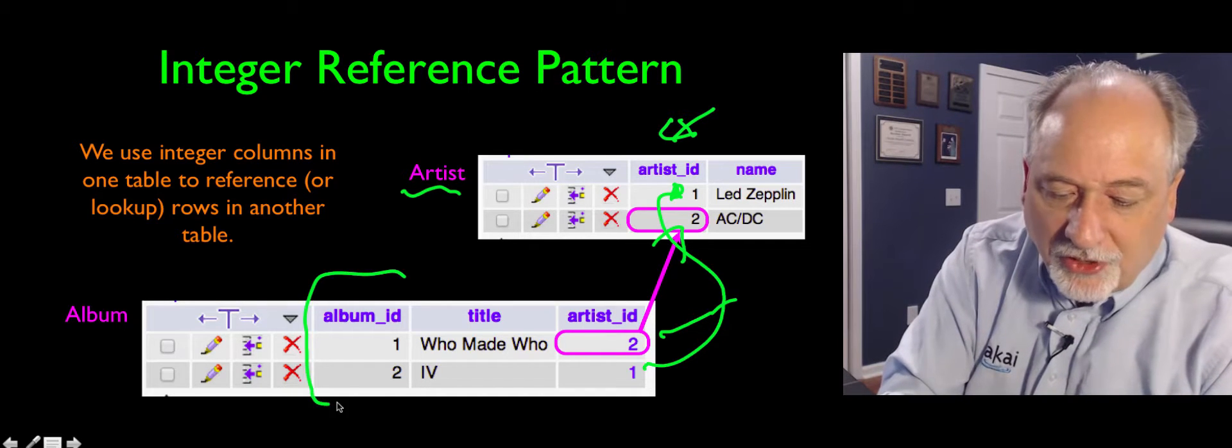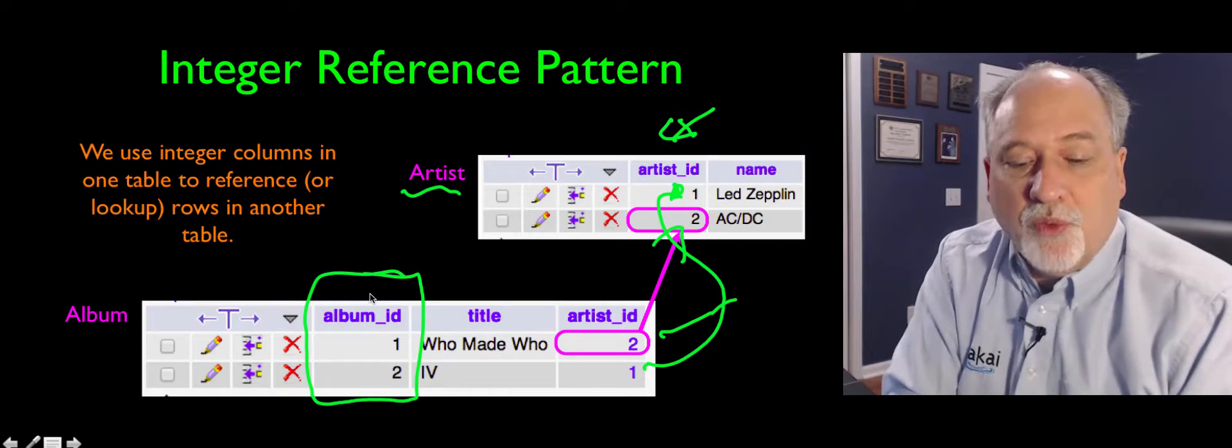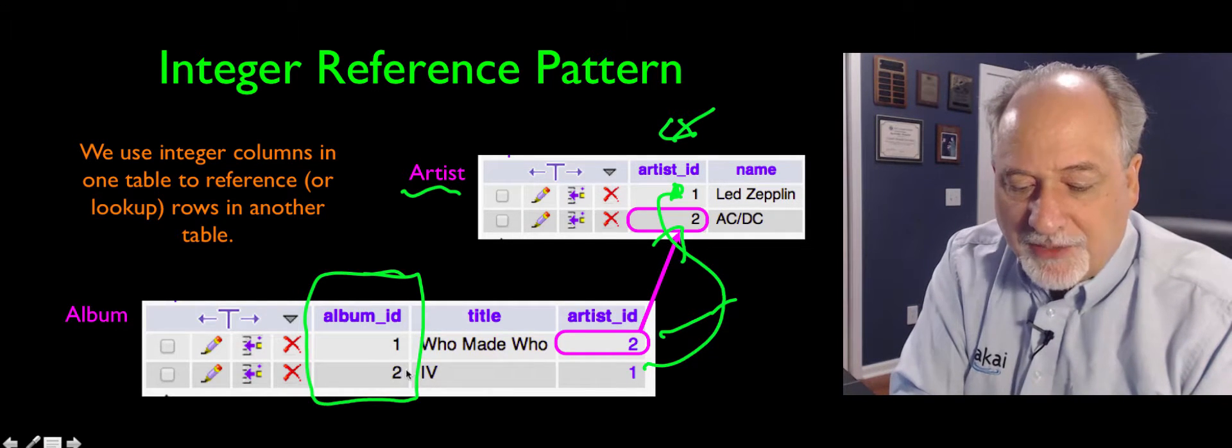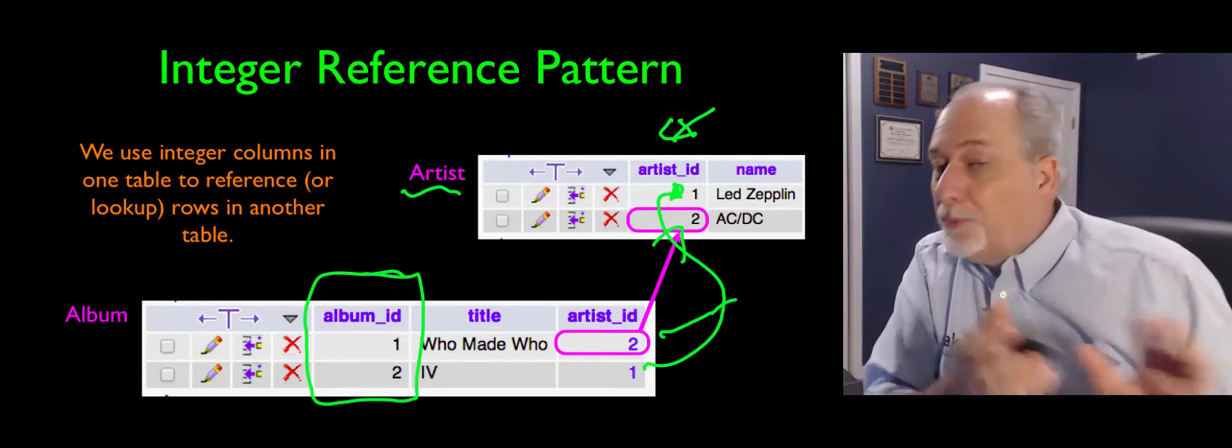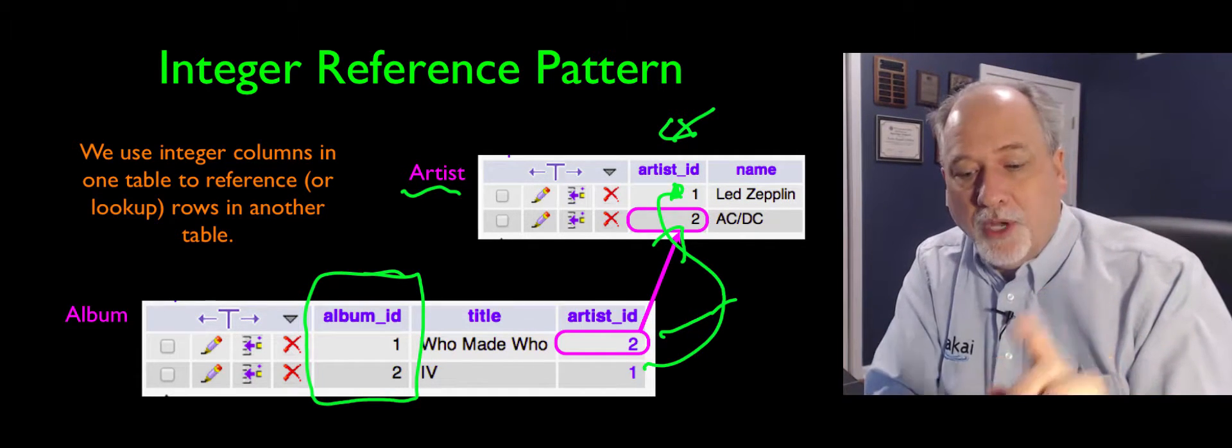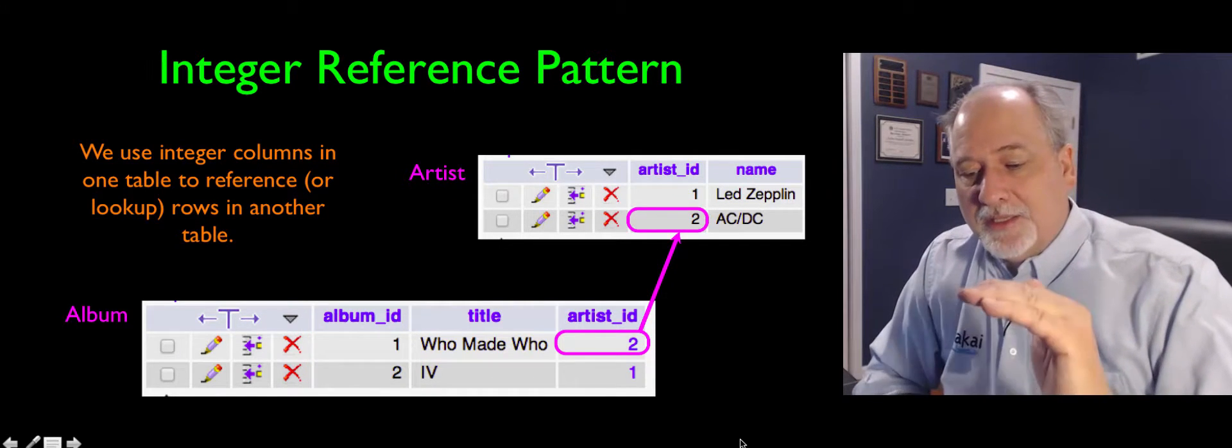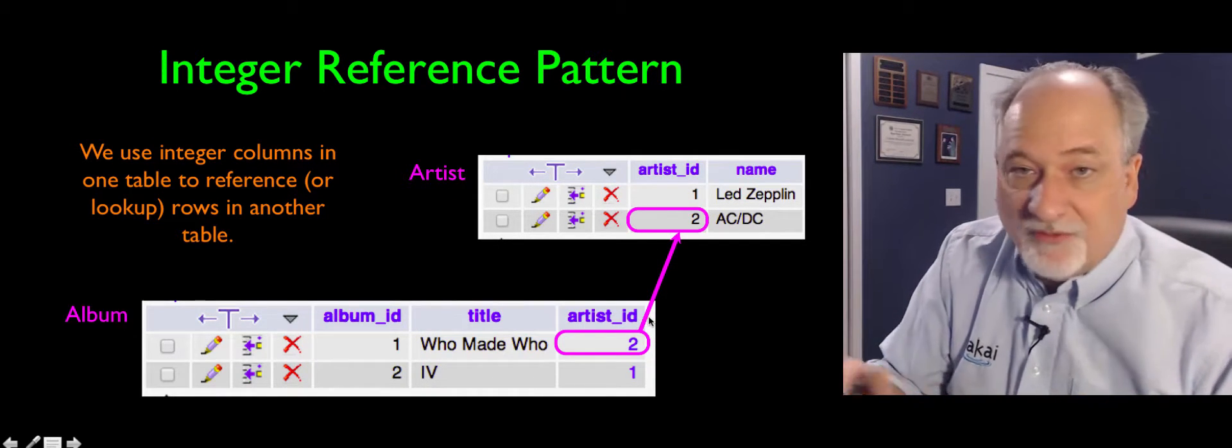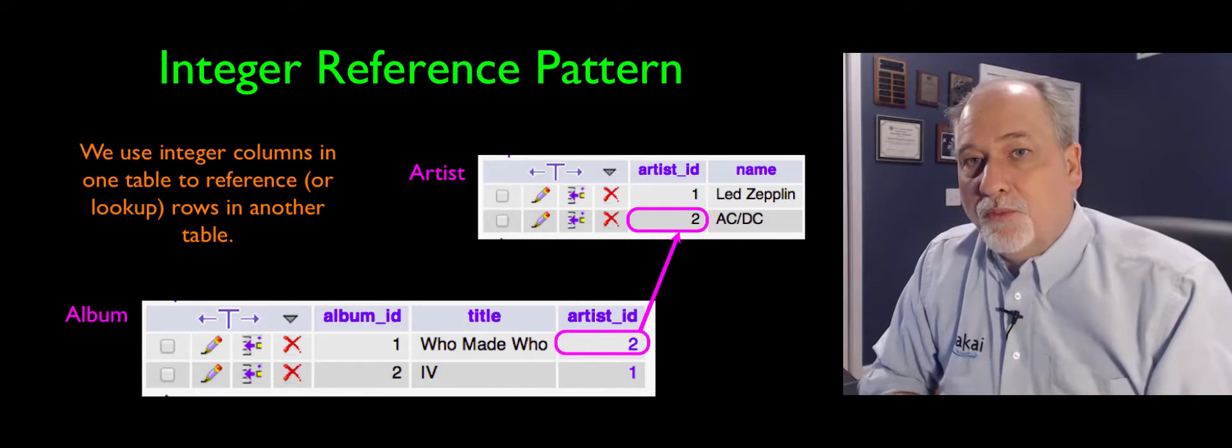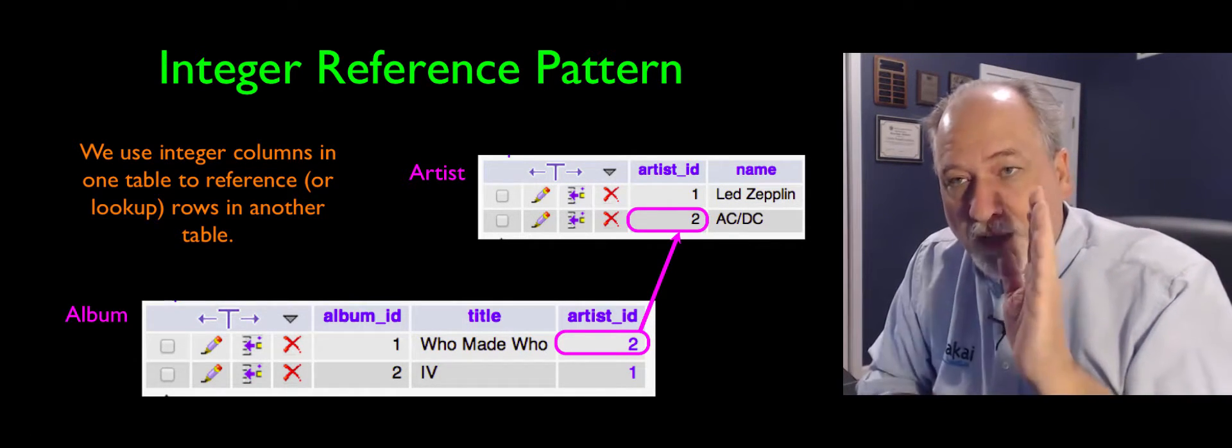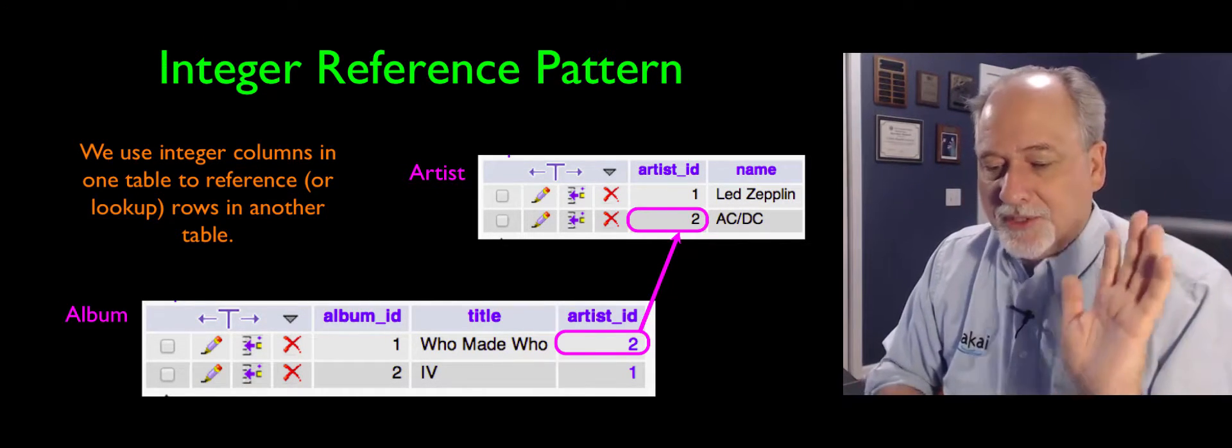This album also itself has rows, and we put a key here as well. So each album has a number. And so anywhere we want to reference Who Made Who, we don't put the string Who Made Who. We put the number one. Same for Led Zeppelin Four, we put the number two. So the idea is we can replicate these numbers very efficiently, put them all over the place, because numbers are short, highly compressible, fast, all kinds of good things about numbers.